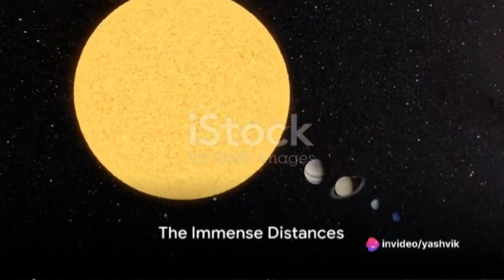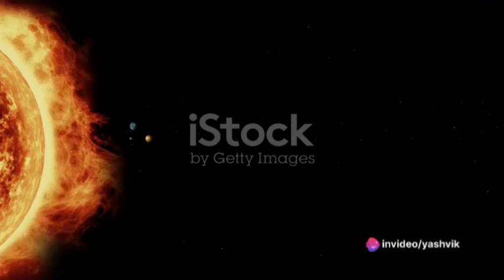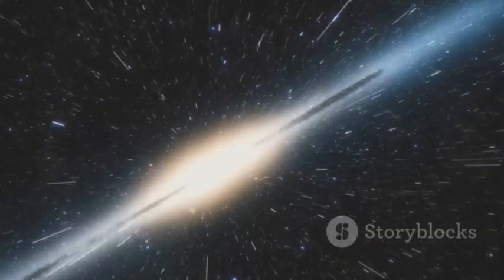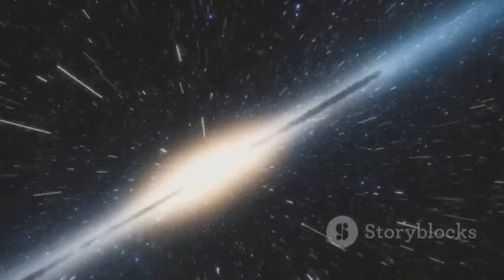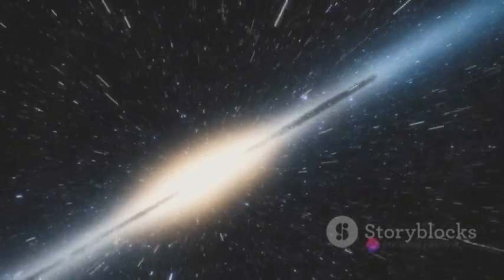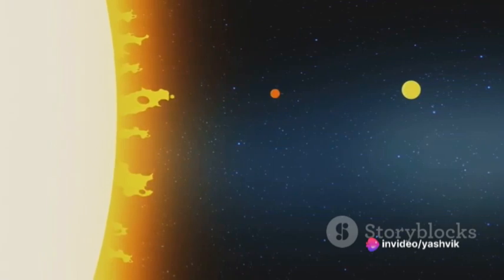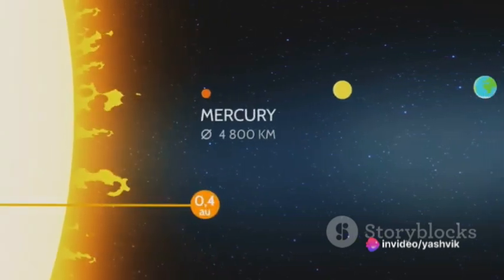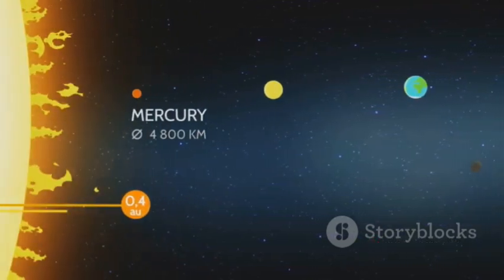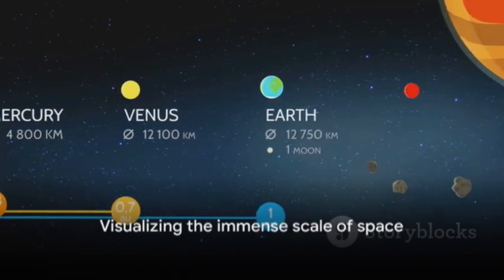Let's consider the distances between the planets too. Traveling from Earth to Mars at the speed of light would take about 3 minutes. But venturing from the sun to Neptune, even at light speed, would take a staggering 4 hours. Now remember, this is all just our solar system. The nearest star to us, Proxima Centauri, on this scale, would be over 4,000 miles away. That's roughly the distance from Los Angeles to New York and back, again.